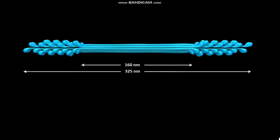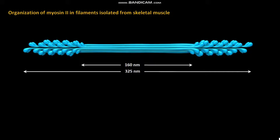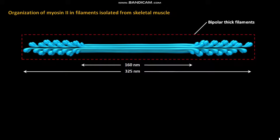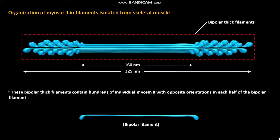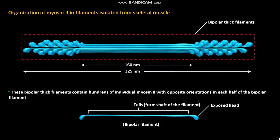Let us discuss the organization of myosin-2 in filaments isolated from skeletal muscle. In skeletal muscle, myosin-2 assembles into bipolar thick filaments. These bipolar thick filaments contain hundreds of individual myosin-2 molecules with opposite orientations in each half of the bipolar filament. In bipolar filaments, the tails form the shaft of the filament with exposed heads.